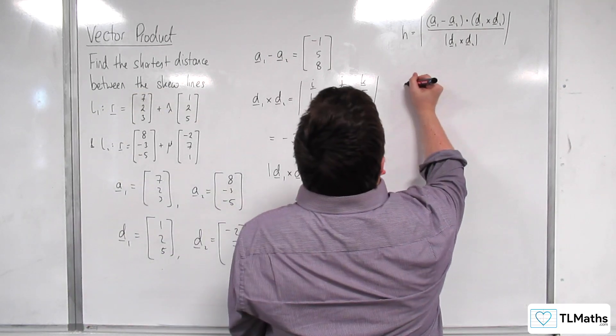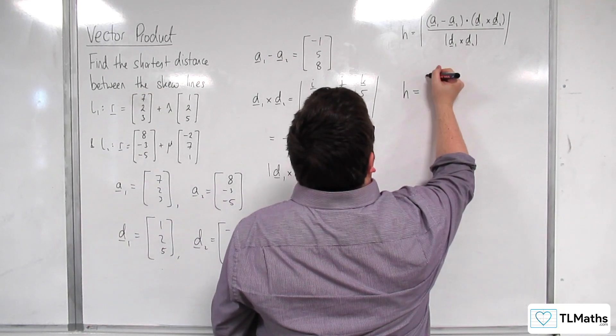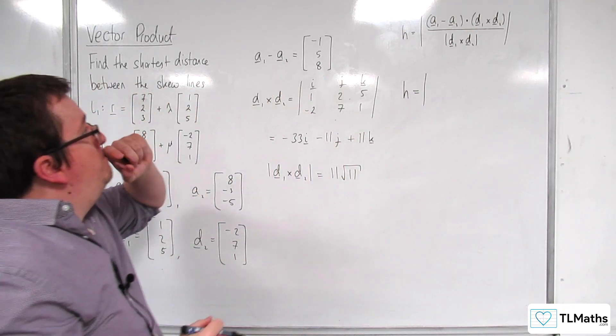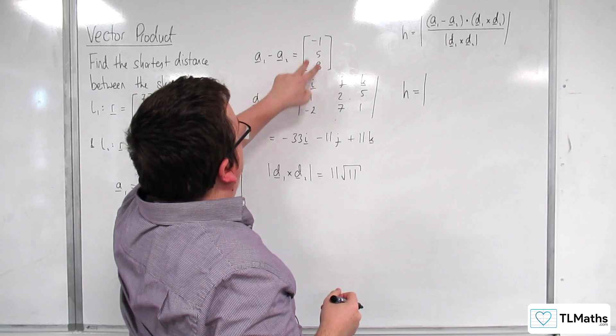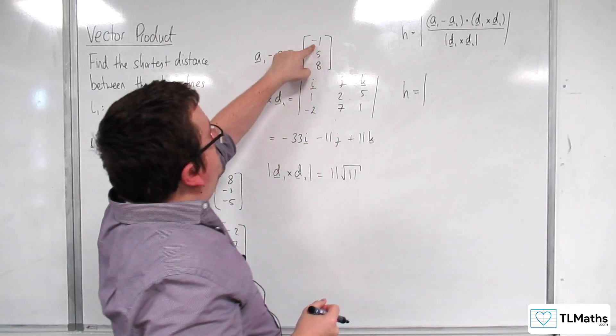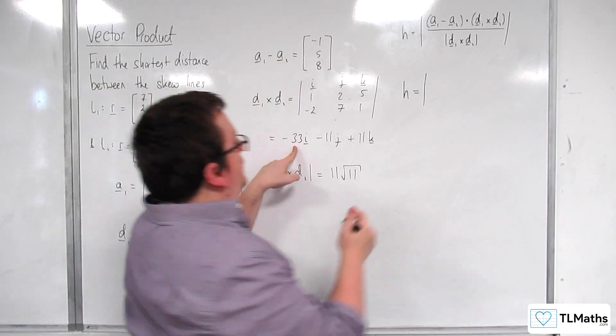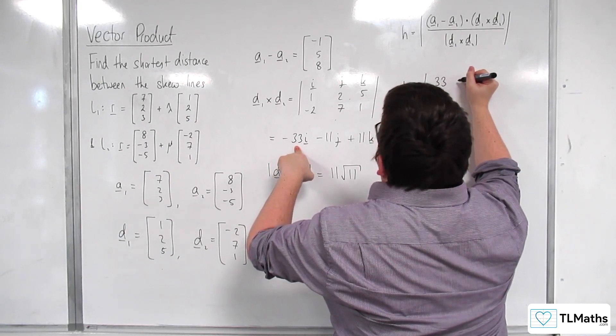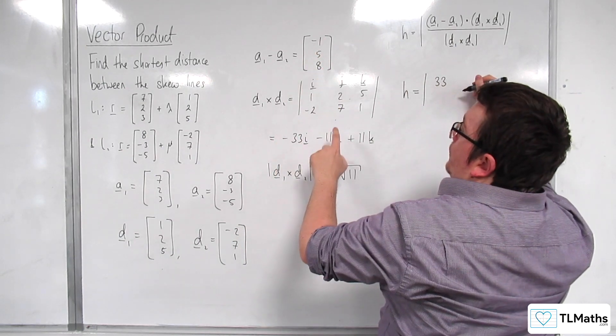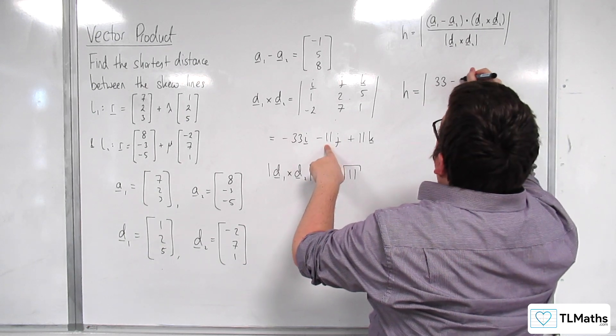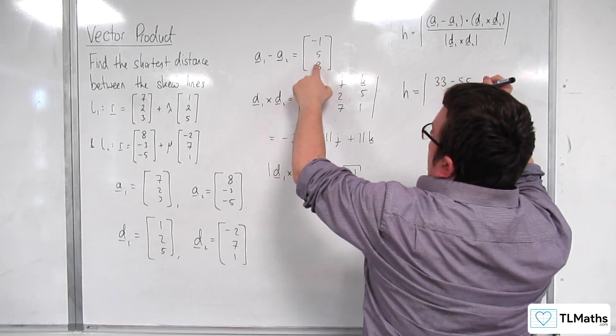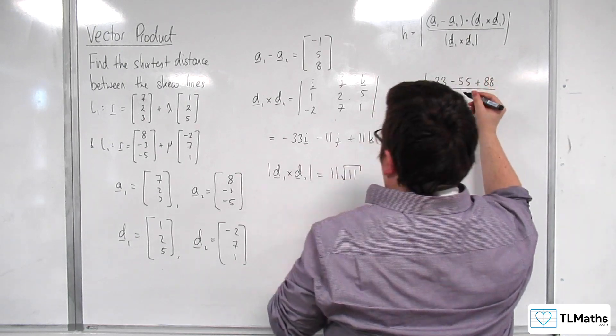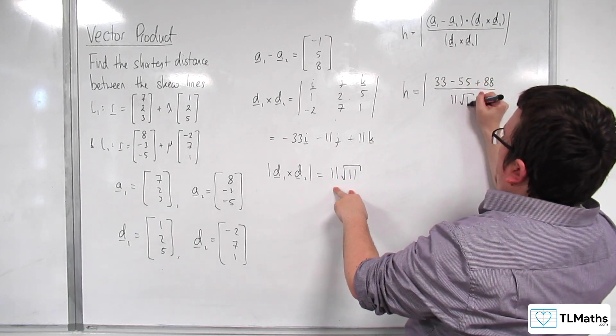So, H is going to be equal to the length of, so we've got A, this one, dotted with this one. So, minus 1 times minus 33, so it's just 33. Then we've got 5 times minus 11, so minus 55. Then we've got 8 times 11, so plus 88. And that's being divided by 11 root 11.